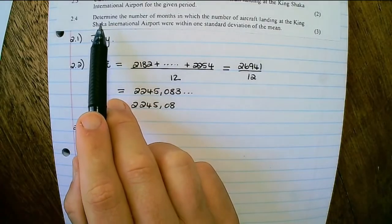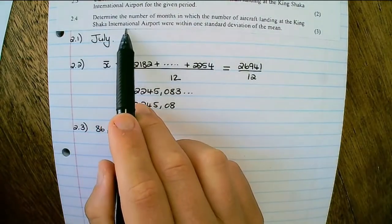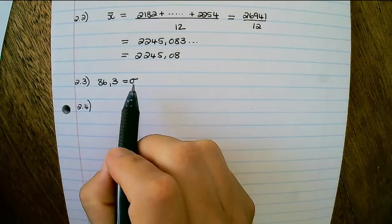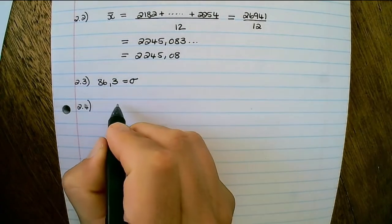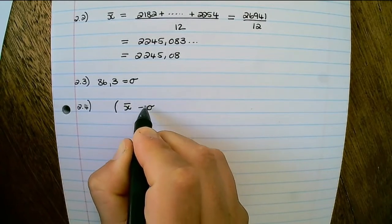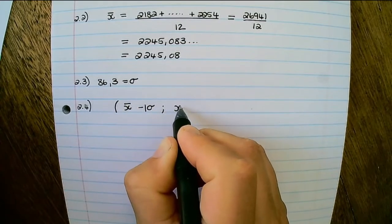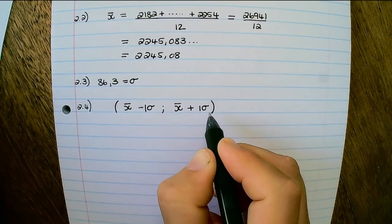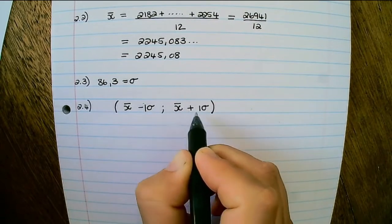Question 2.4: Determine the number of months in which the number of aircraft landing at the King Shaka International Airport were within one standard deviation of the mean. I already have the standard deviation and the mean, so I need to create an interval. It's the mean minus 1 standard deviation for the lower value, and then the mean plus 1 standard deviation for the upper value. If they're asking for 2 standard deviations, then you simply have 2 times the standard deviation.